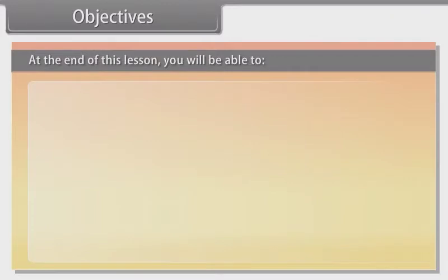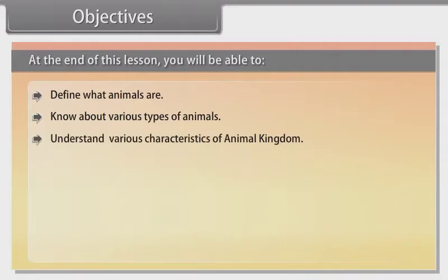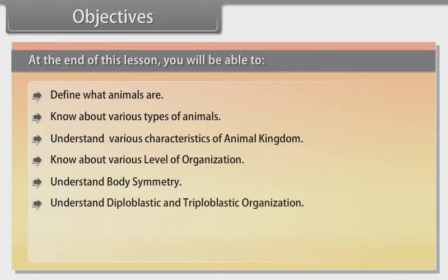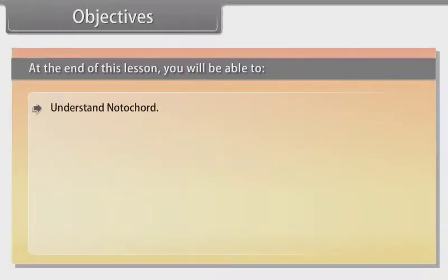Objectives: At the end of this lesson, you will be able to define what animals are, know about various types of animals, understand various characteristics of the animal kingdom, know about various levels of organization, understand body symmetry, and understand diploblastic and triploblastic organization. Also, know about coelom.